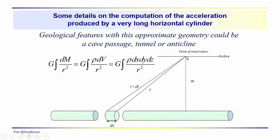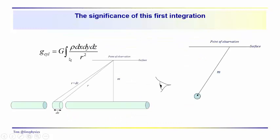M is the distance from the point of observation down to the center of the object. The observation point could be in or out relative to being directly above the cylinder — this is not necessarily the minimum distance. We have r, the distance from the point of observation to the right side of the differential volume element, and r plus dr to the left side, which has thickness dx.